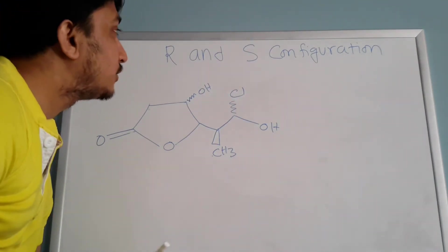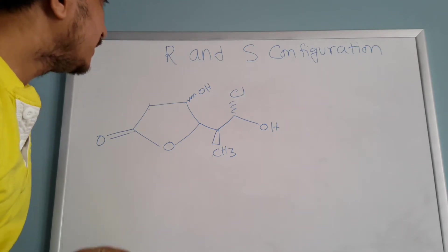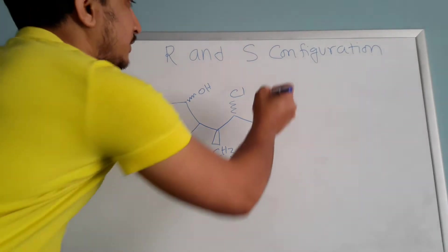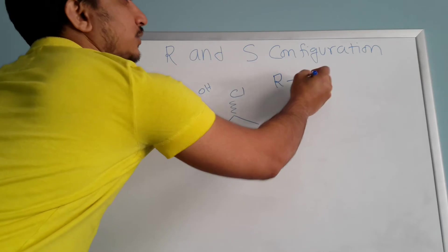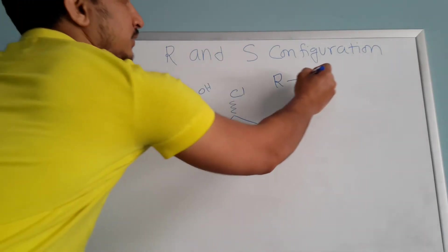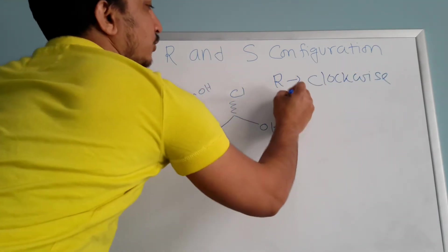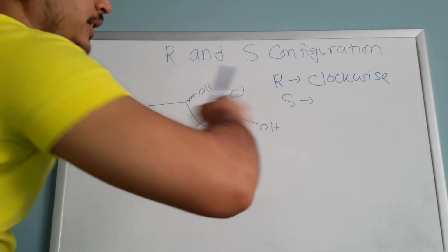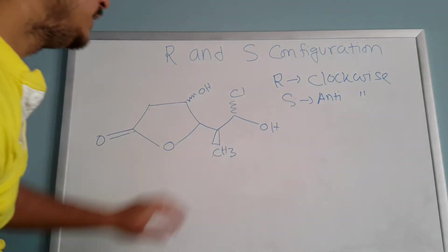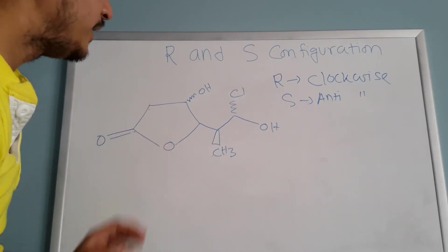Hello everyone, today I'll talk about R and S configuration. R and S configuration is really simple. R configuration is when your molecule is rotating clockwise, and S configuration is when your molecule is rotating anti-clockwise. So R means clockwise, S means anti-clockwise.